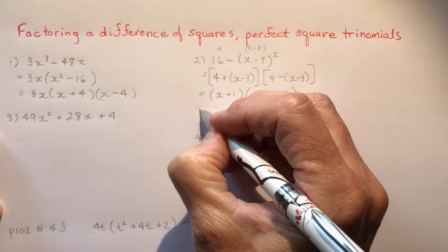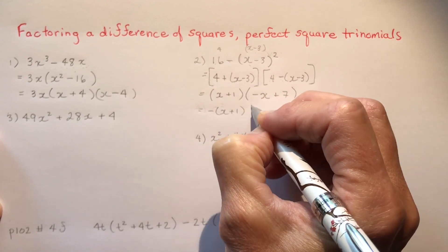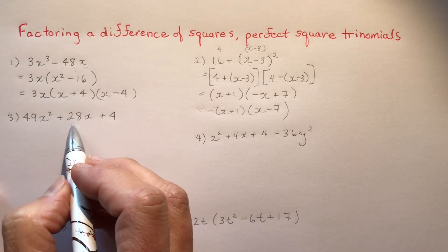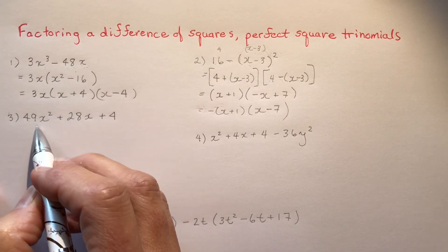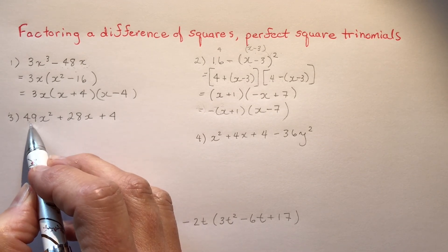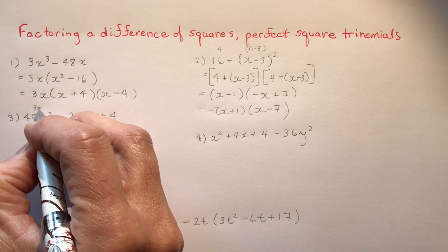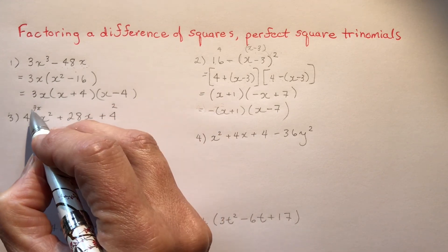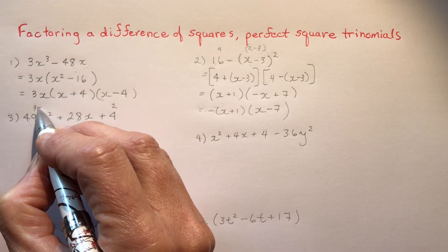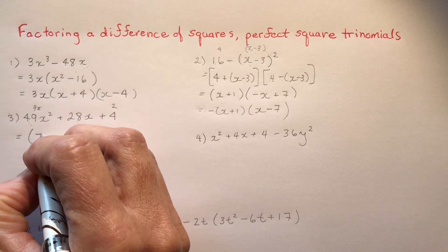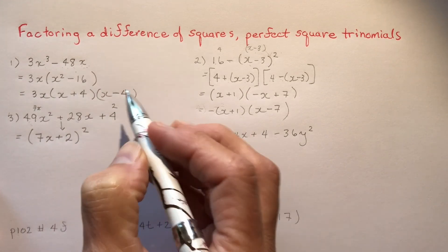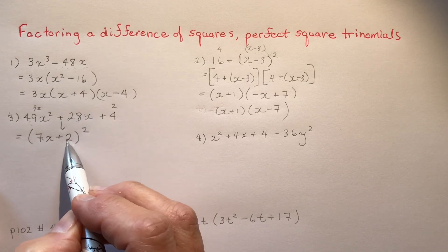You could factor out the negative sign from that last bracket to make it neater. Now for another example: 49x² + 28x + 4. You might think complex trinomial, but check — √(49x²) = 7x, √4 = 2, and 2 × 7x × 2 = 28x, which matches the middle term. So this factors simply as (7x + 2)².